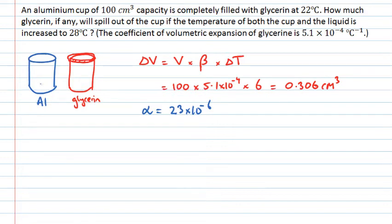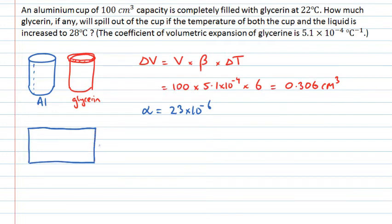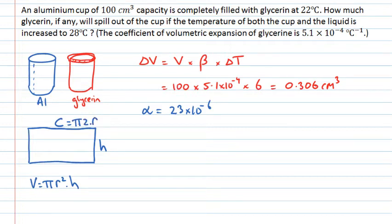To find the change in volume of the aluminium cup, rather than considering the cylinder's volume directly, I'll cut the cylinder along the side and unfurl it flat. The height of the cylinder is one dimension, and the circumference is another. The volume of the cylinder is V = πr²h, and since circumference C = 2πr, the radius is r = C/2π, giving V = (1/4π) × C² × h.